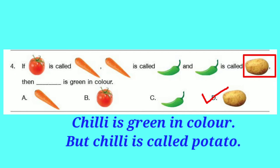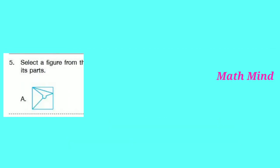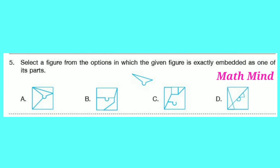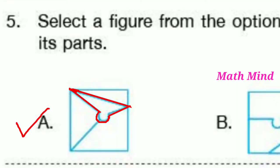Question number 5: Select a figure from the options in which the given figure is exactly embedded as one of its parts. The correct option is A — the figure can be exactly embedded there.